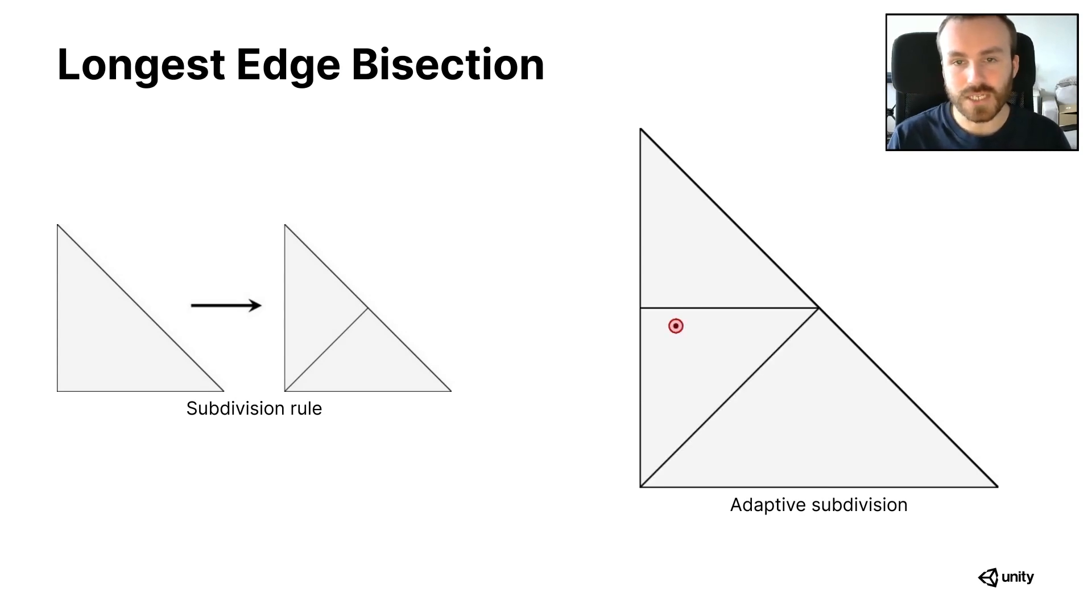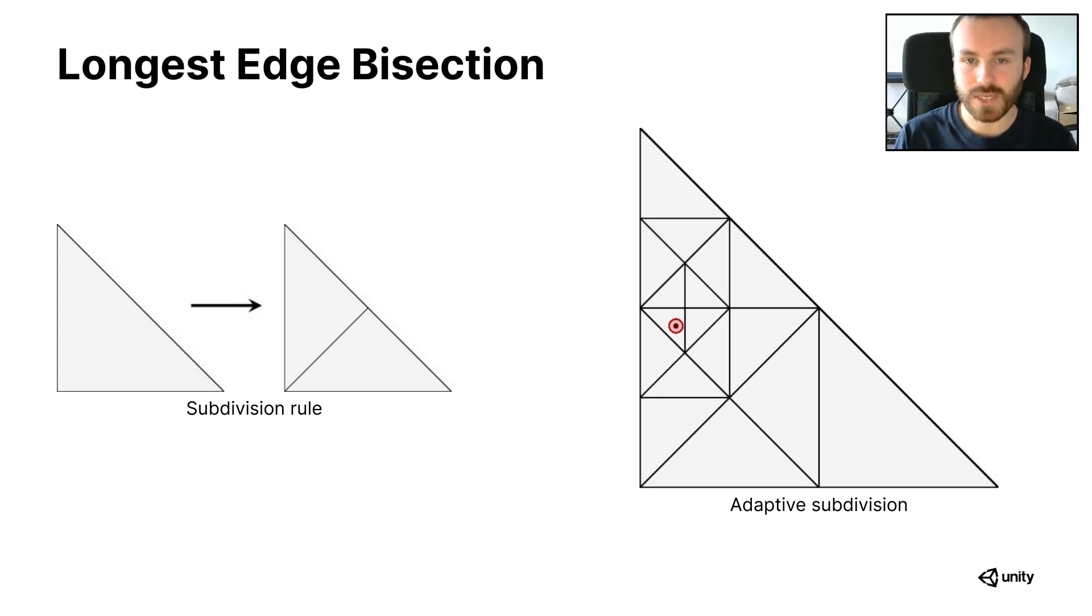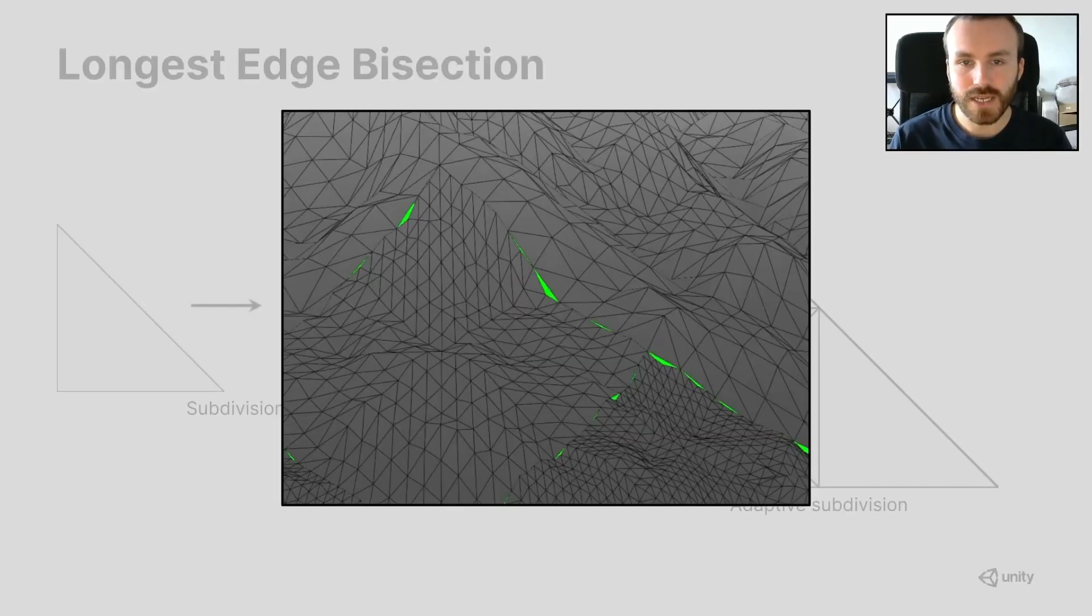Of course, this can also be done non-uniformly to produce adaptive tessellations. For example, here we're targeting a finer subdivision around the red target. One important thing to notice is that the adaptive subdivision is free of t-junctions by construction, and avoiding t-junctions is a crucial property for terrains as it prevents cracks and holes in the final geometry, which is something that quadtrees, for example, cannot achieve without further post-processing.